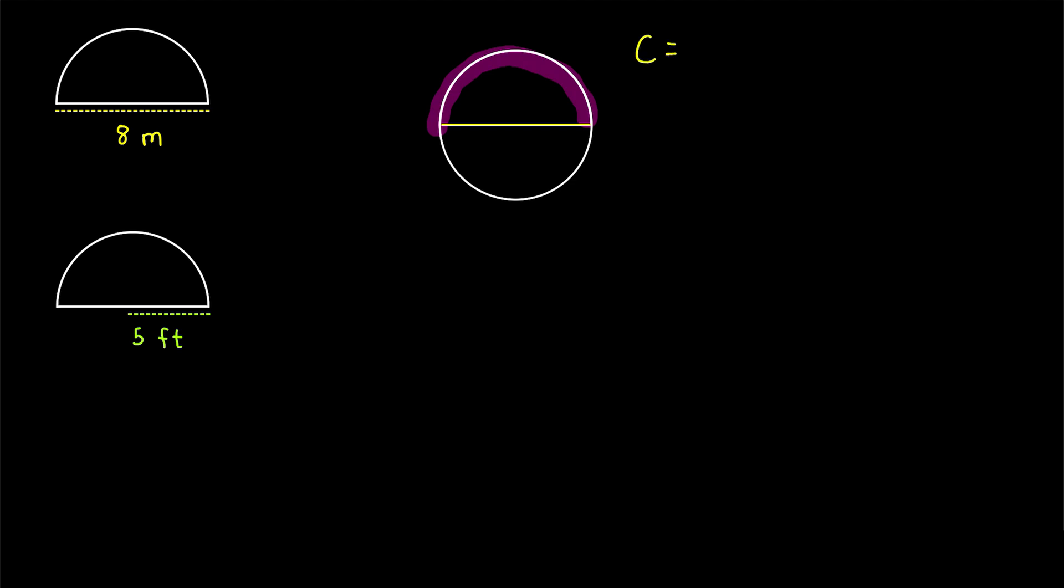The circumference of a circle is equal to pi multiplied by the diameter. So if we want to call the perimeter of our semicircle P, for starters, we need to take half of the circumference of the whole circle. So pi times d, that's the circumference, and divide that by 2. We've got half of the circumference in our semicircle's perimeter.